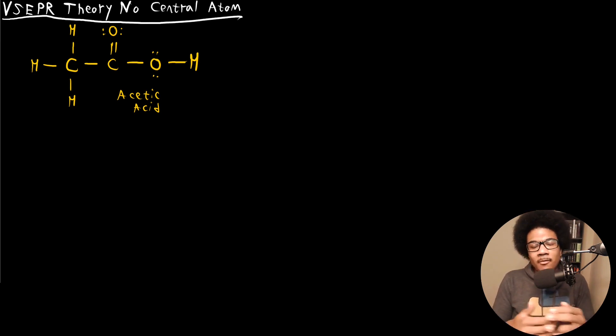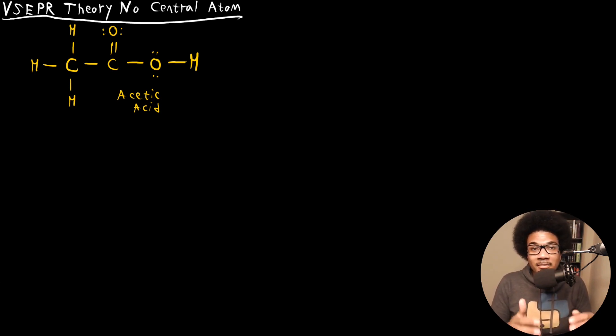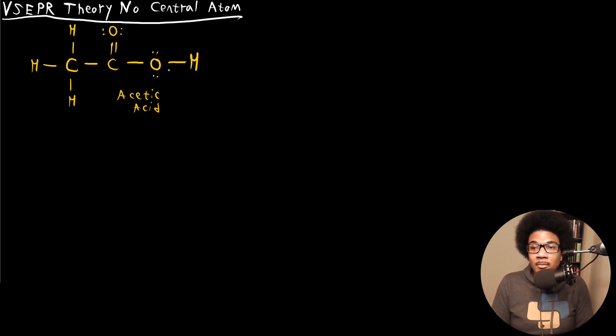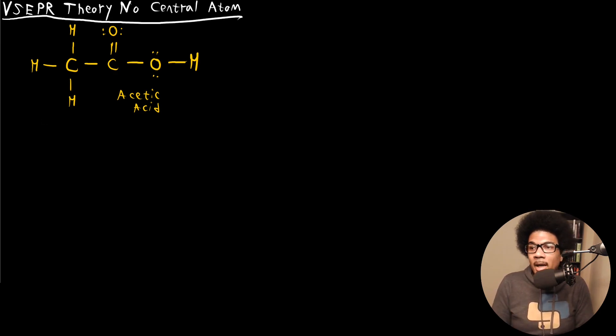So what do we do? Do we just throw VSEPR theory out of the window? Of course not. The same rules of energy minimization are at play. These atoms are still going to try to arrange themselves such that they reduce electron repulsion. We just have to chunk this problem up into a couple of different atomic centers and then put it all back together.